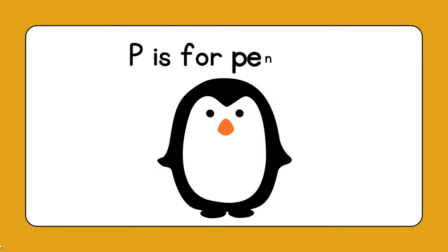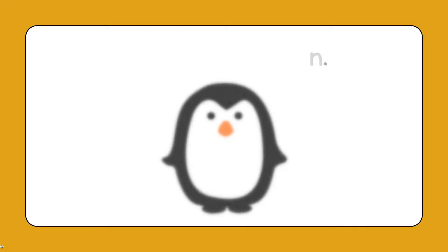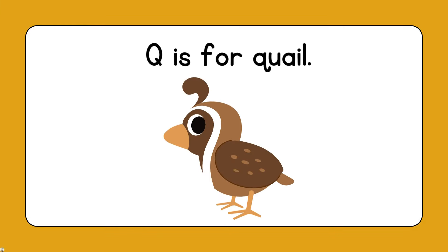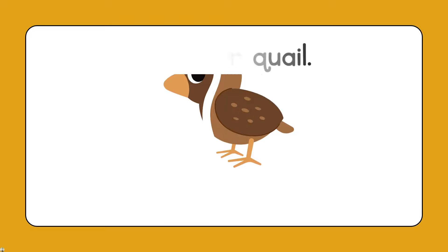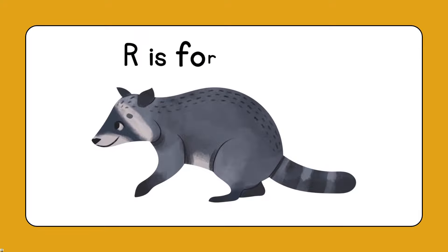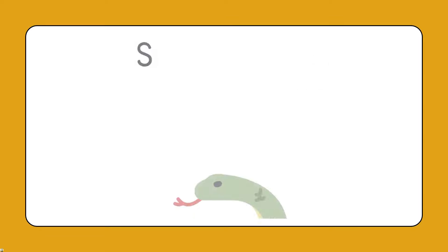P is for Penguin. P is for Penguin. Q is for Quail. Q is for Quail. R is for Raccoon. R is for Raccoon.